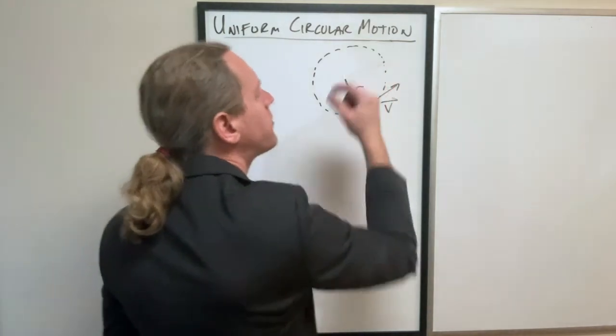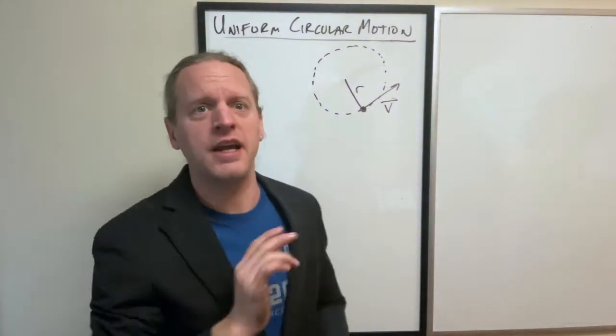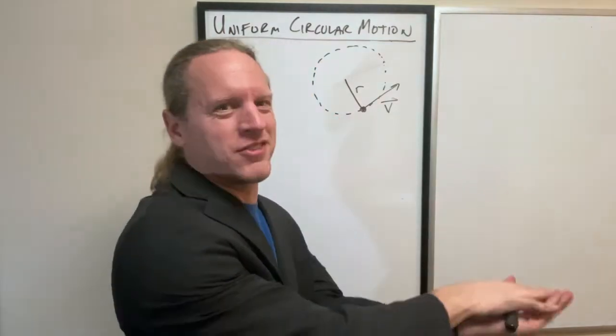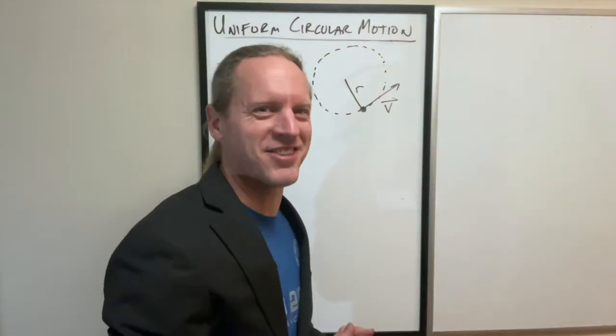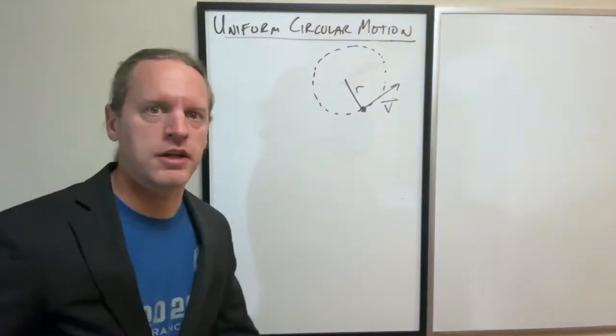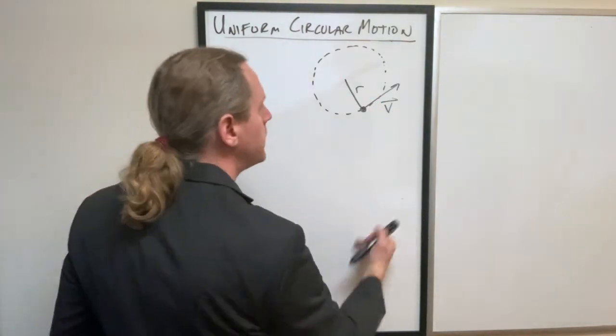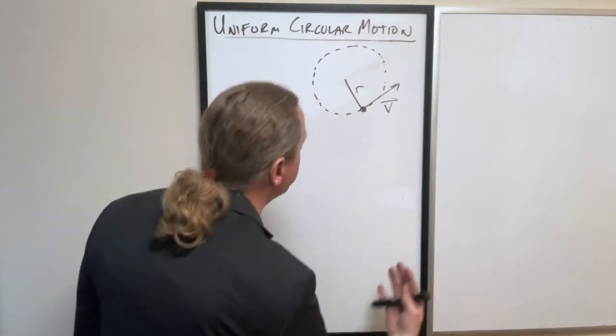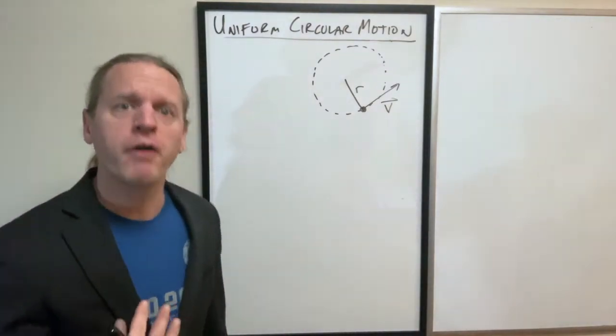Now to be clear, the velocity is changing simply because you can't keep going in the same direction and stay in a circle, obviously. So otherwise though, constant speed, constant radius, and without deriving any of this because you've hopefully seen it before.